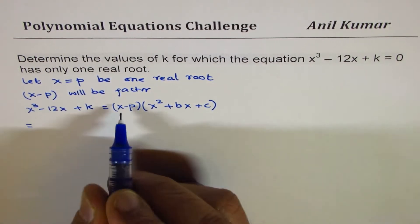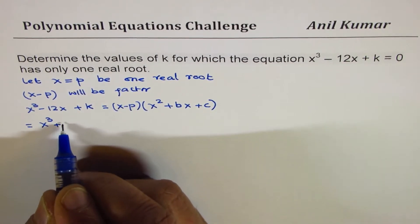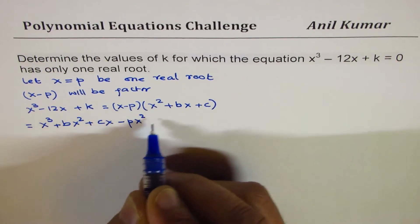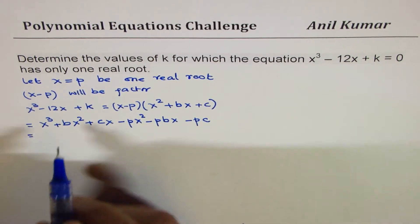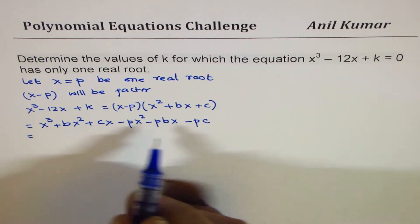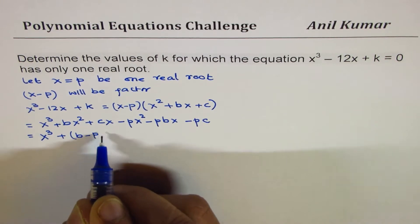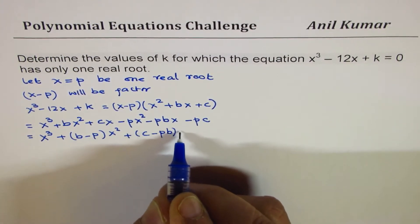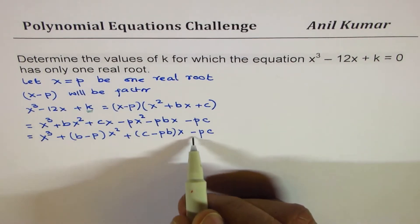Now we need to find what b and c could be. Let me expand this. I get x · x² = x³, then plus bx² plus cx minus px² minus pbx and minus pc. Factoring out, the coefficient of x² is (b - p), the coefficient of x is (c - pb), and the constant term is -pc. Comparing coefficients, the constant term k equals -pc.